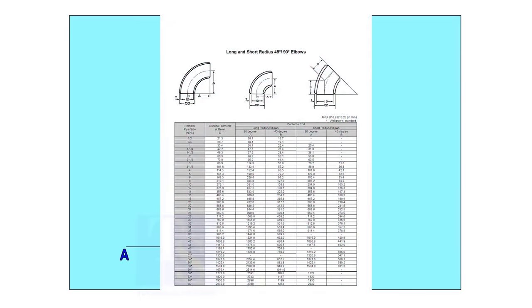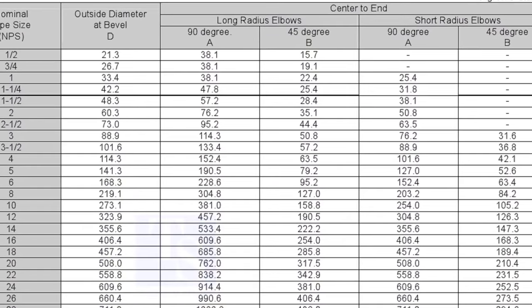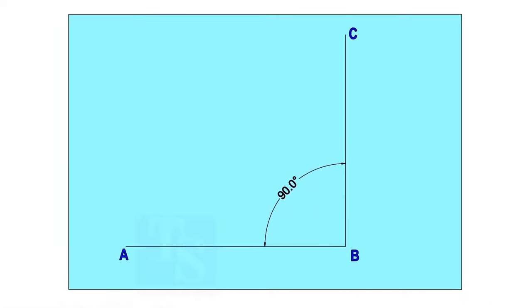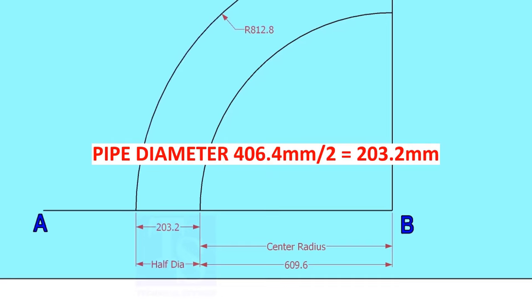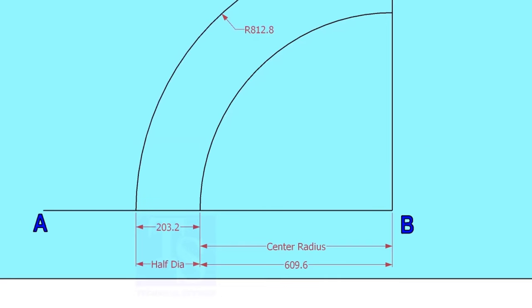Let us check the center radius of 16-inch long radius elbow. Draw an arc with the center radius 609.6 millimeters. Mark the half OD arcs on both sides of the center line.